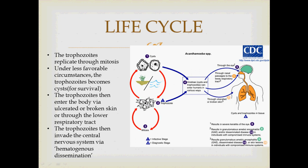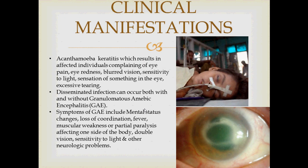Regarding the life cycle, trophozoites replicate through mitosis, and under less favorable circumstances, the trophozoites become cysts for survival. The trophozoites enter the body via ulcerated or broken skin or through the lower respiratory tract, then invade the central nervous system via hematogenous dissemination.